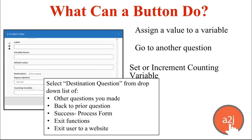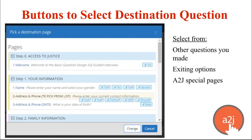When you click on the Destination dropdown in the button section, you can select from a menu of the other questions you've already created, special A to J commands like Back to Prior Question, Success Process Form, and different exiting functions that we'll talk about in video three. Here is an example of that destination menu — you can just select from one of the questions you've already created, and scrolling down would show special exiting options and special A to J commands like Back to Prior Page.